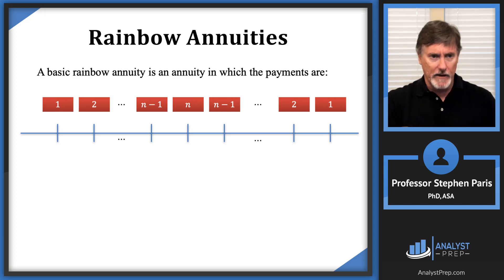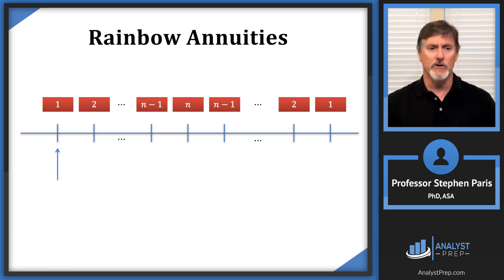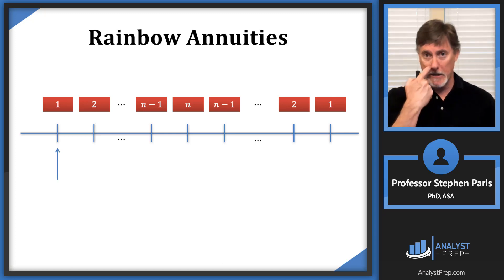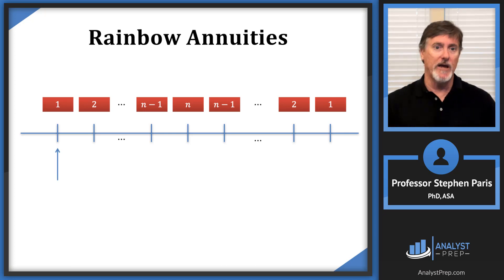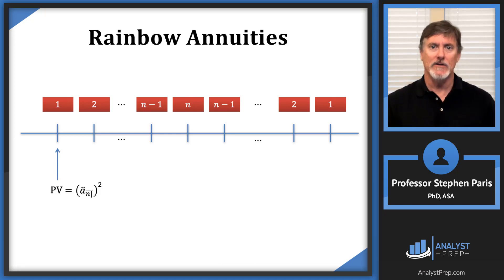The timeline would look like this, and it's kind of clear why you may want to call this a rainbow annuity. I'm going to get right to the punchline with the formula rather than deriving it — I'm just going to give it straight to you. If you take the valuation date at the time of the first payment, thinking of this as a rainbow annuity-due, then the present value of this rainbow annuity-due is ä_angle_n squared.